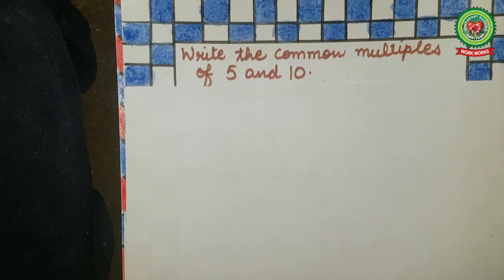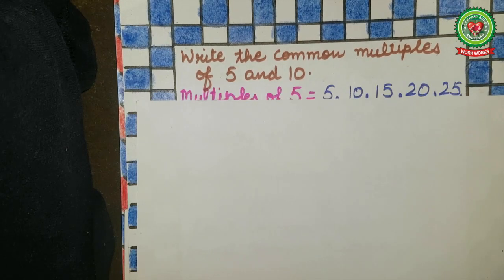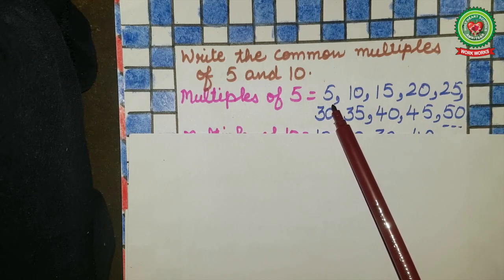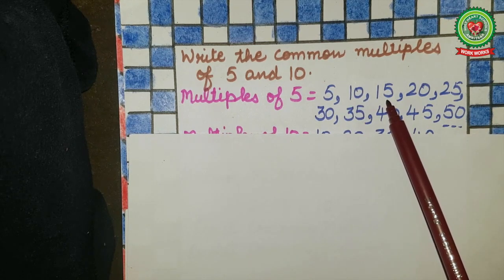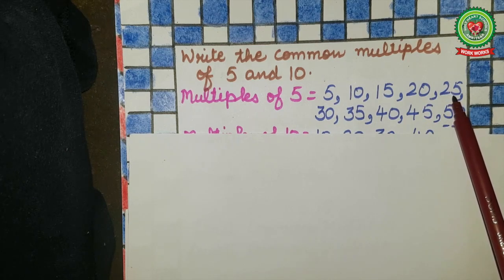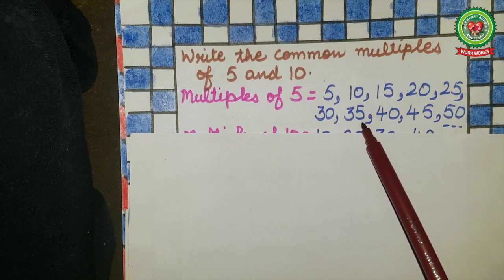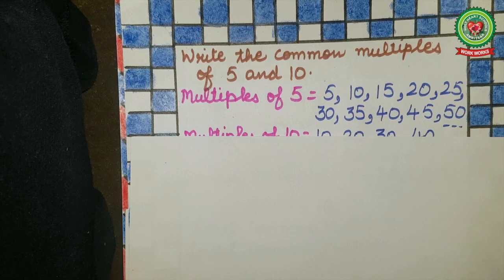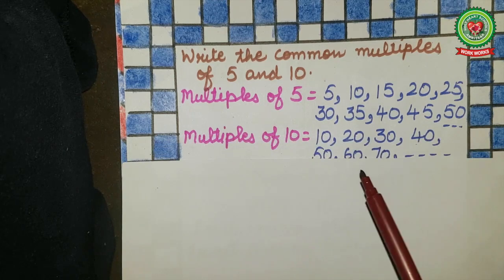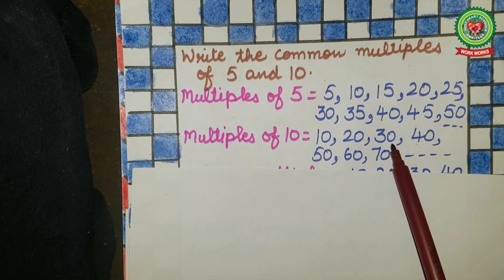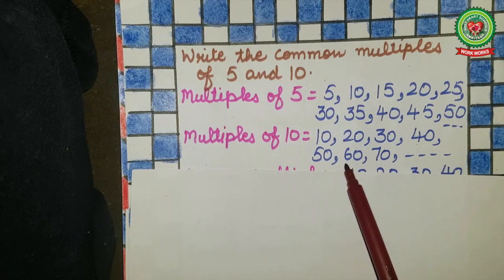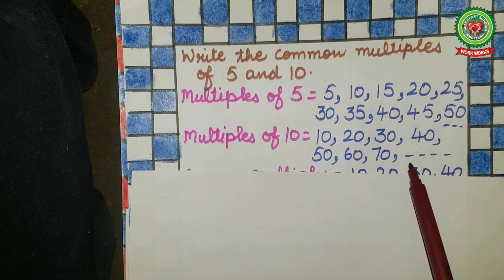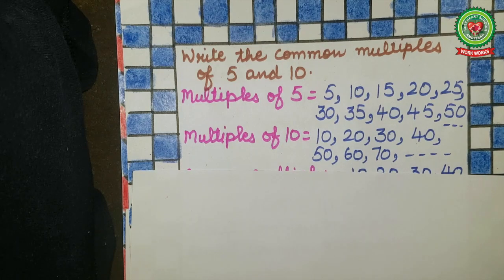If I ask you to tell me the multiples of 5, your answer will be 5, 10, 15, 20, 25, 30, 35, 40, 45, 50 and so on. If I ask you the multiples of 10, your answer will be 10, 20, 30, 40, 50, 60, 70 and so on. If I ask you the common multiples, your answer will be...